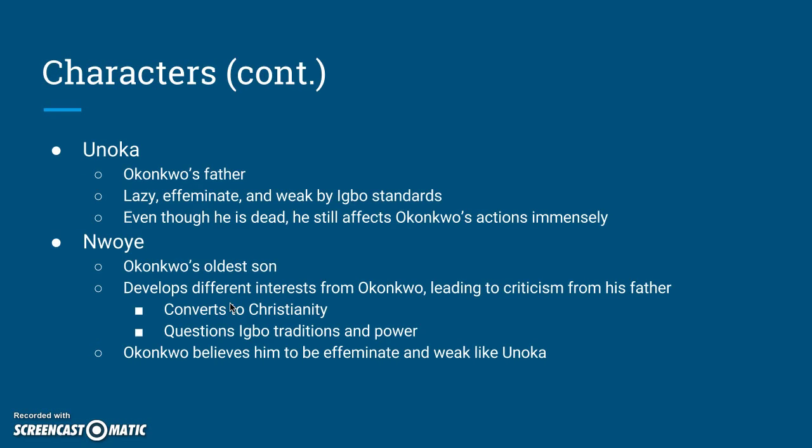Unoka is Okonkwo's father — lazy, effeminate, and weak by Igbo standards. Even though he's dead, he still affects Okonkwo's actions immensely, and many critics believe Okonkwo is heavily motivated by his absent father. Okonkwo's oldest son, Nwoye, develops different interests from his father, which leads to a lot of criticism. He questions Igbo traditions and customs, and ultimately converts to Christianity once white settlers arrive in Igbo land. Okonkwo considers him effeminate and weak like his own father, which leads to him rejecting his oldest son.